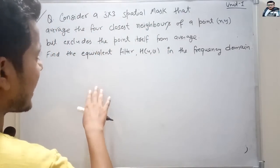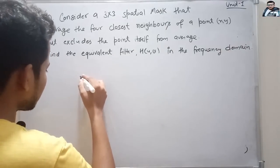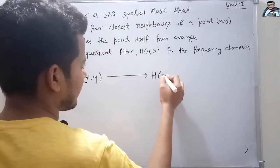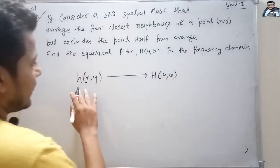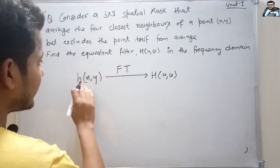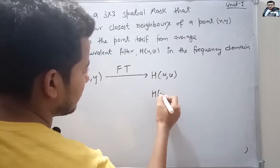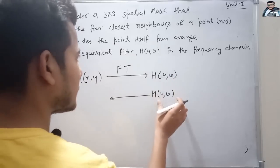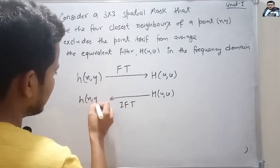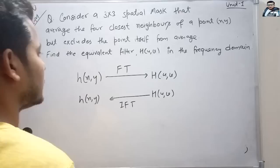Let's first see how to convert filters from the spatial domain to the frequency domain and vice versa. If we have a filter h(x,y) in the spatial domain and want to convert it to h(u,v) in the frequency domain, we simply apply the Fourier transform. To go back from frequency domain to spatial domain, we apply the inverse Fourier transform. So to find h(u,v), we take the Fourier transform of the spatial filter.